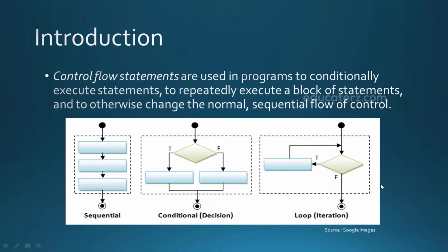Computer programs are basically divided into two types based on the flow of the program. The first one is sequential flow, where your program is executed top to bottom, line by line, from line one to the end. It moves in an incremental order with no repetition of previous lines, and it is not intelligent enough to make decisions based on conditions.